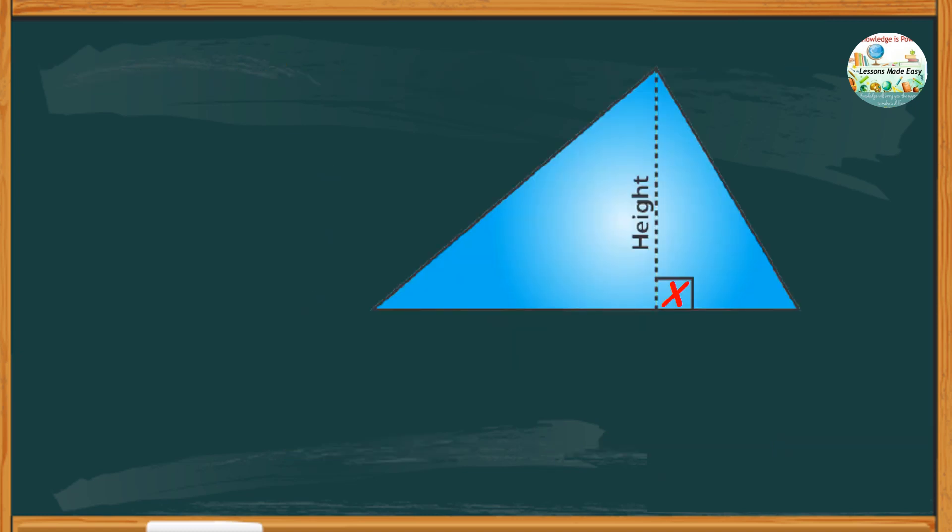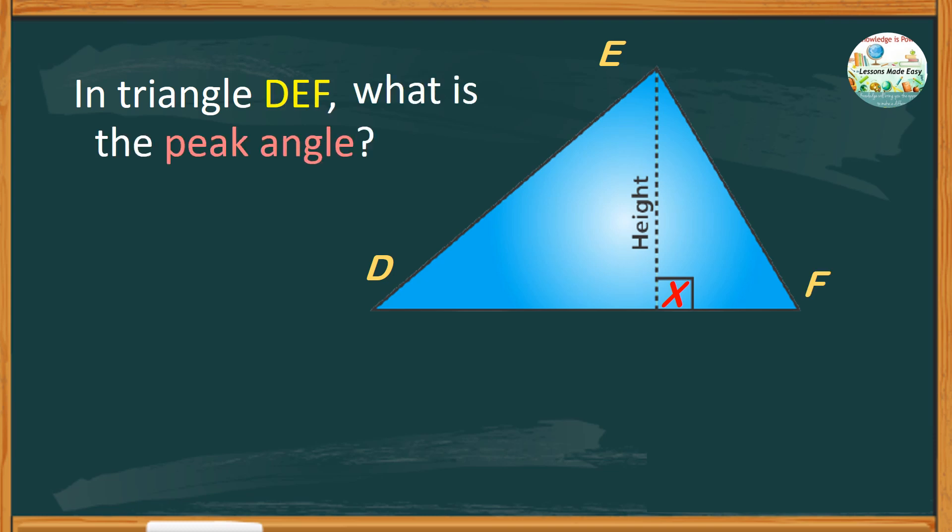Down to our last question. In triangle D, E, F, what is the peak angle? Is it angle D, angle E, angle F, or angle X? What do you think is the peak angle? For the correct answer, it is angle E. The peak angle is always opposite the base.